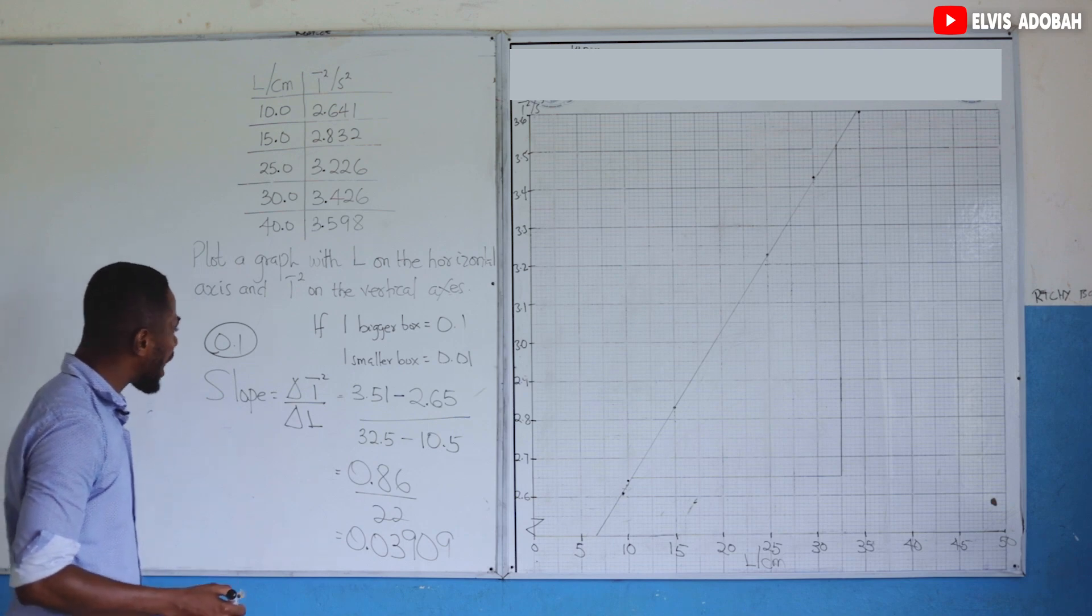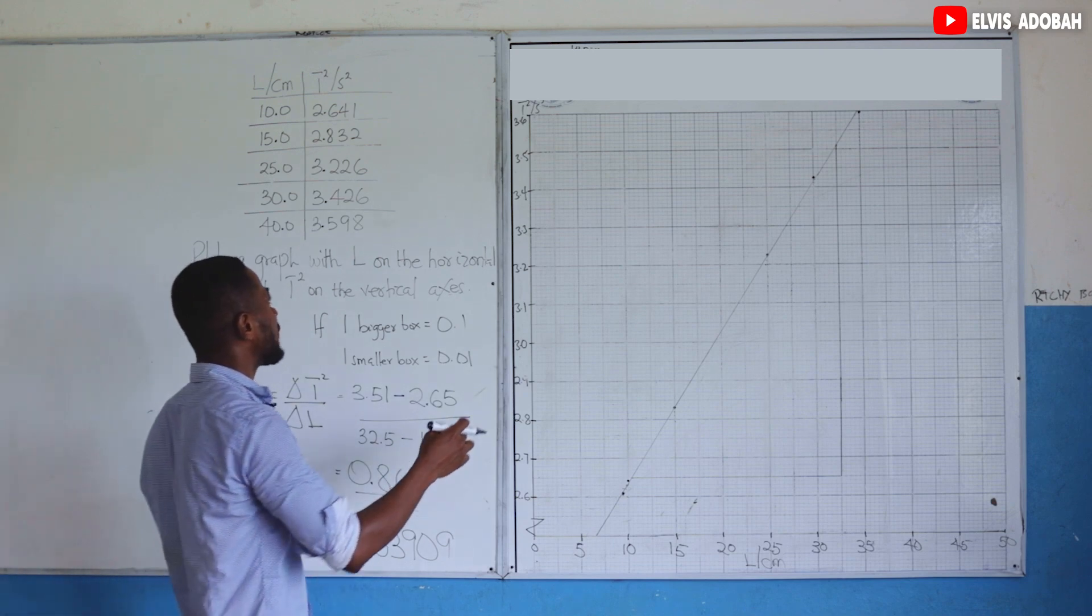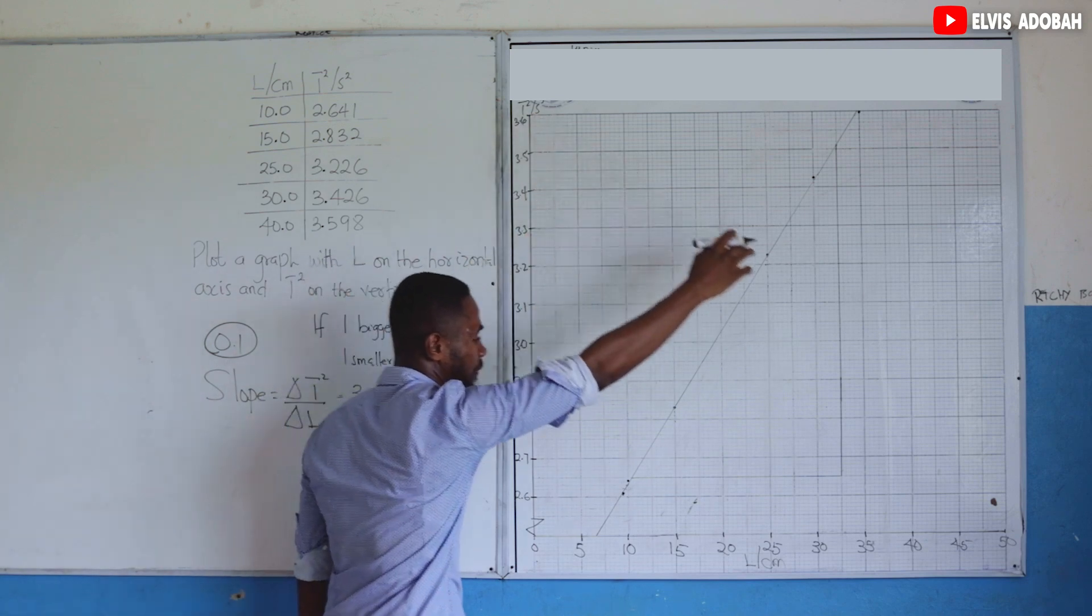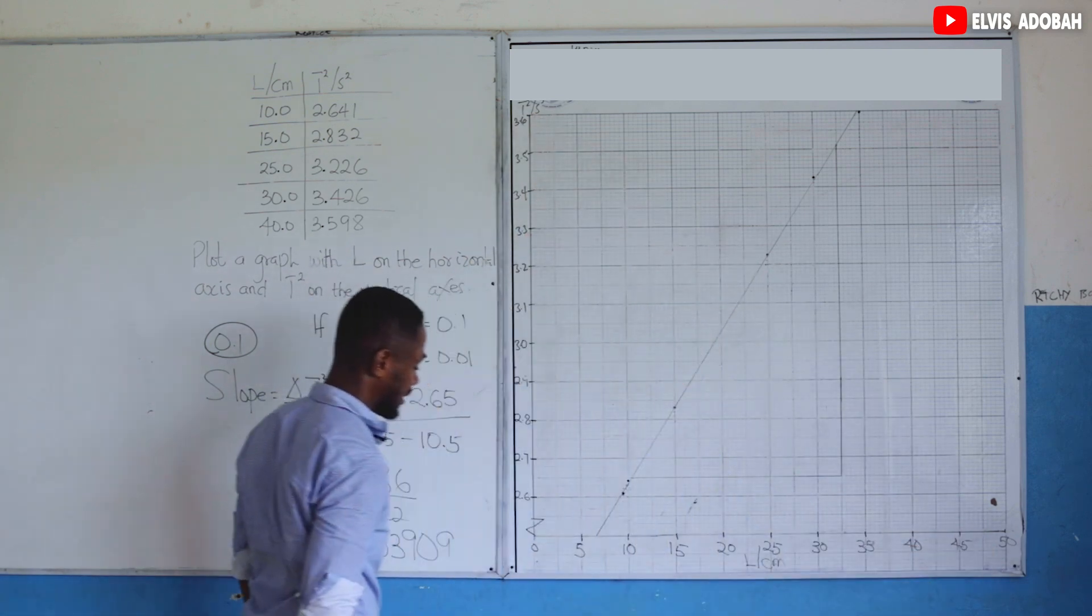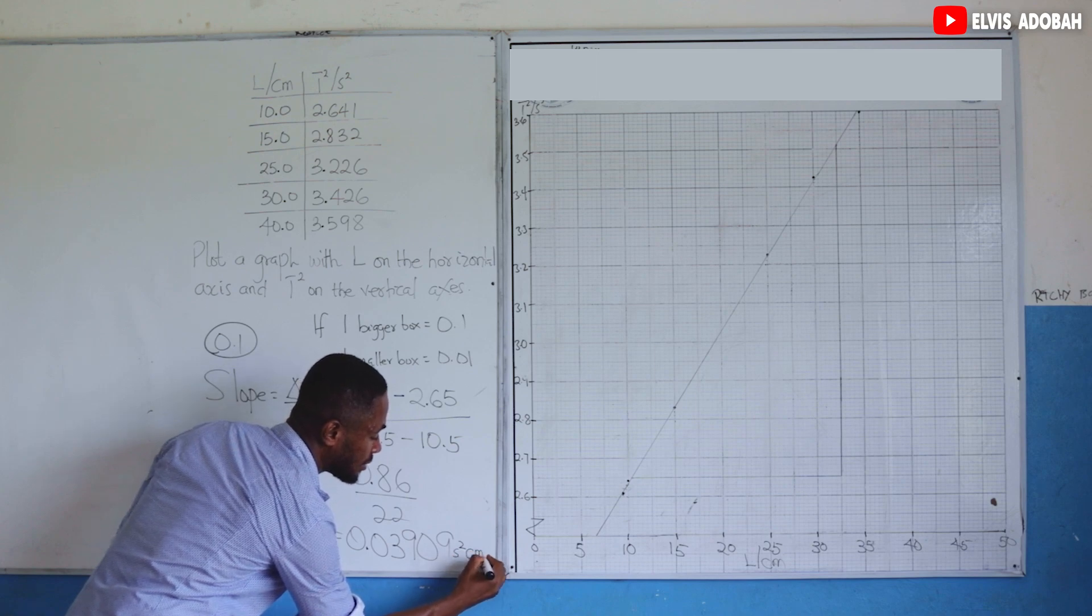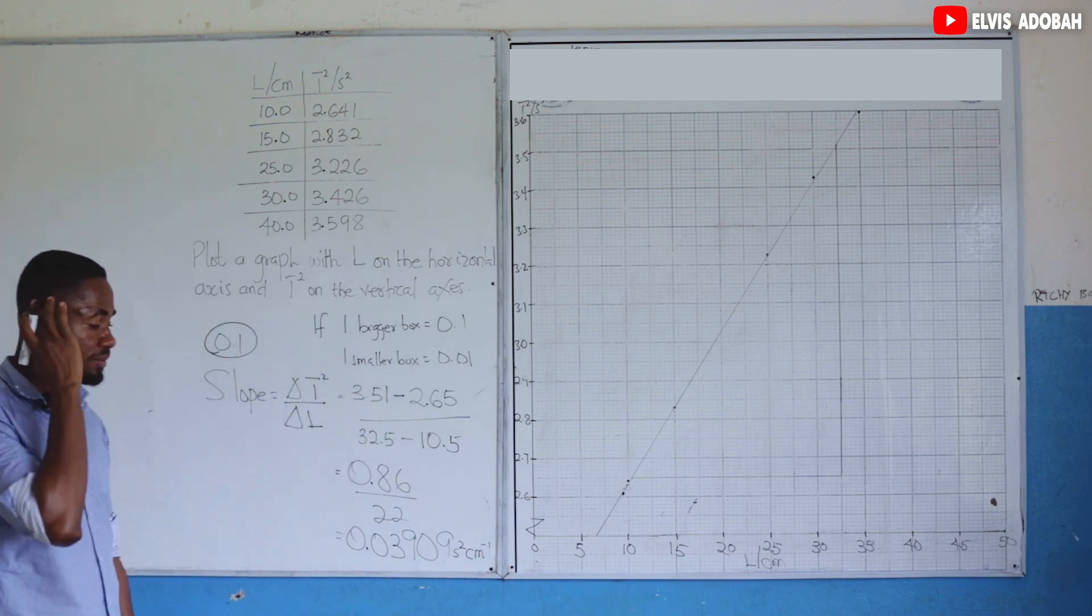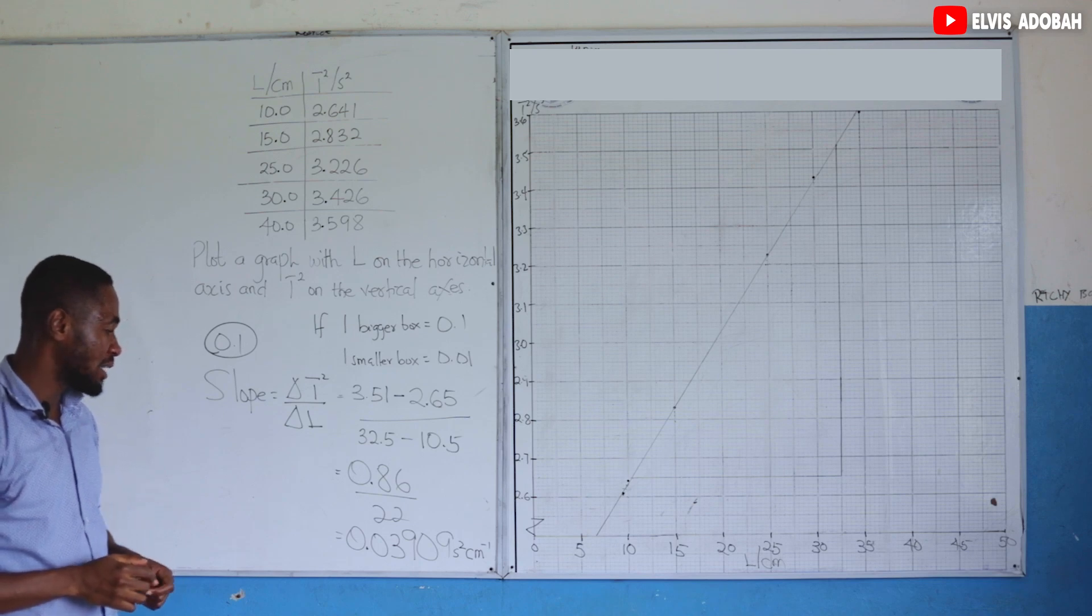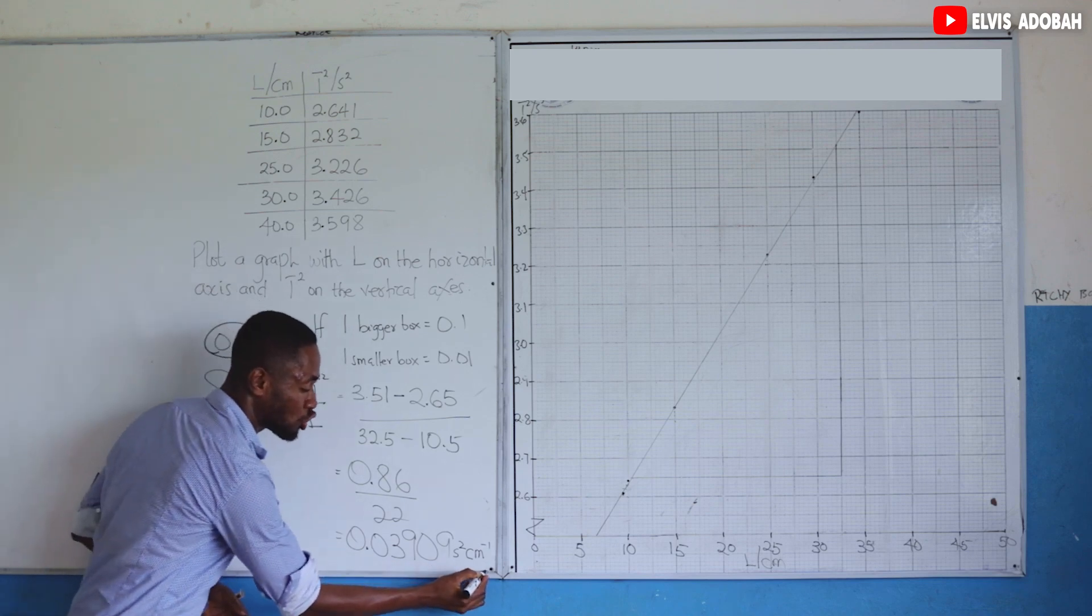And what will be the unit for our slope? It is the unit of the vertical axis divided by the unit of the horizontal axis. So second squared per centimeter. That becomes our unit for our slope.